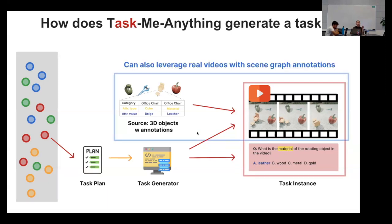We can also leverage real videos or real images with scene graph annotations to generate these tasks. So here we are generating images from scratch using 3D graphics engines, but we can also use a real video as long as we have some annotation.